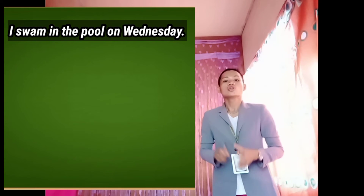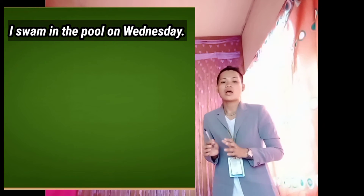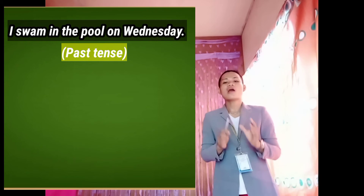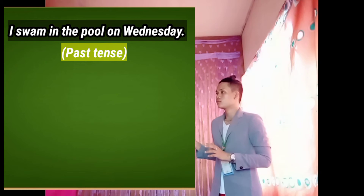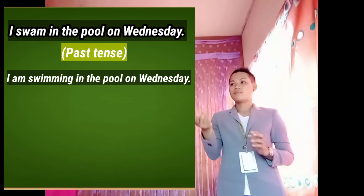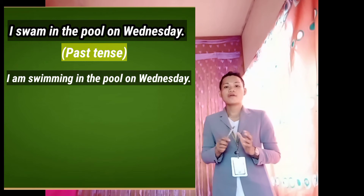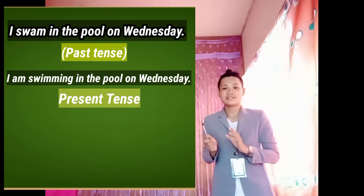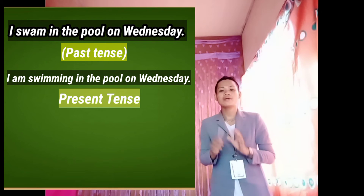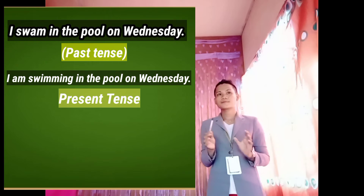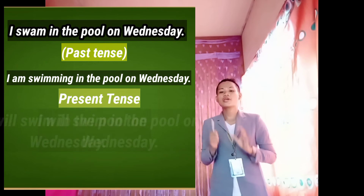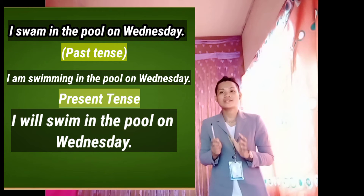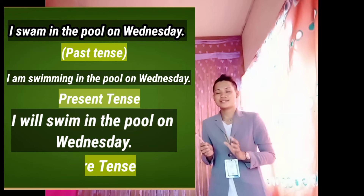Okay, last question: 'I swam in the pool on Wednesday.' This sentence is a kind of verb tense that refers to the past tense. And now, how will you elaborate this sentence using the present and future tense? Anyone? Ruby, your answer: 'I am swimming in the pool on Wednesday' refers to the present tense. Yes, that's correct. How about in future tense? Please stand up, Sheila. Your answer is: 'I will swim in the pool on Wednesday' — your answer is future tense. That's correct.